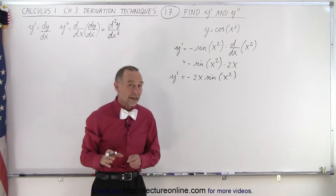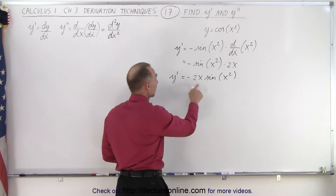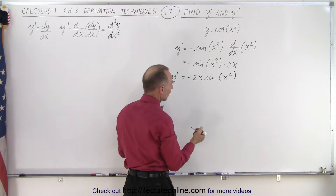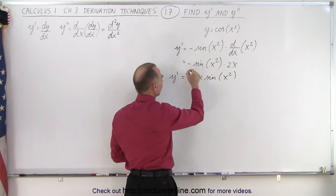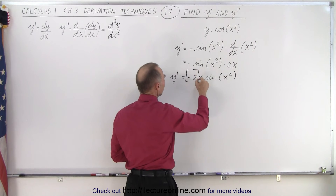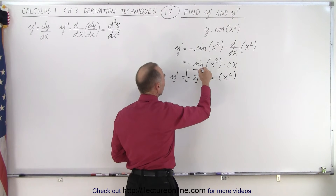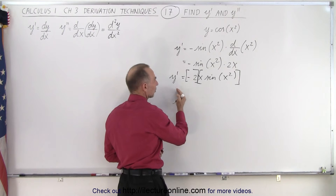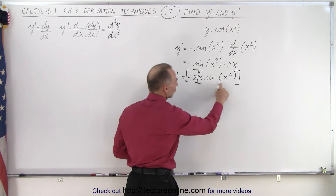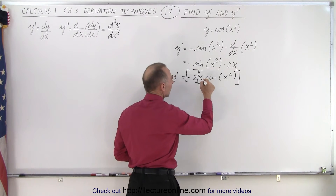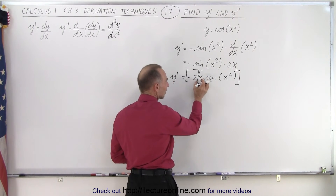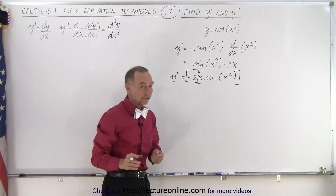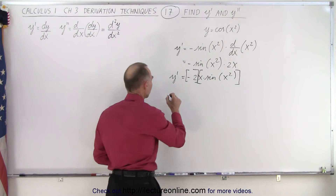So now if we want to find the second derivative, we'll have to take the derivative of this. And now we have a product. We also have a negative 2 in the front, so we can go ahead and pull that out. That's a constant, so that comes out to the front, and we're just going to take the derivative of this. Remember there's a product here, the product of x times the sine of x squared, so we have to use the product rule in that case.